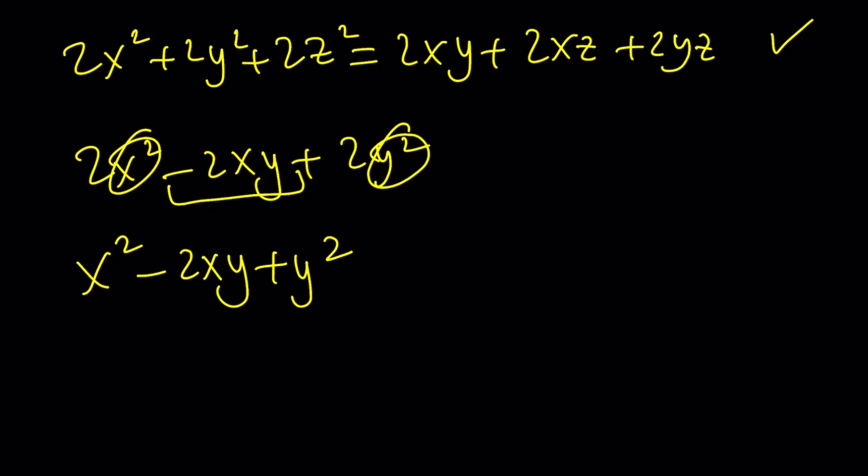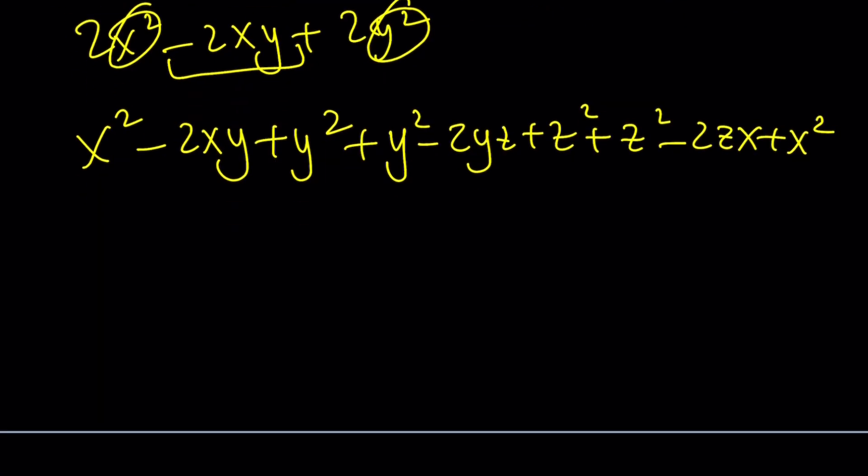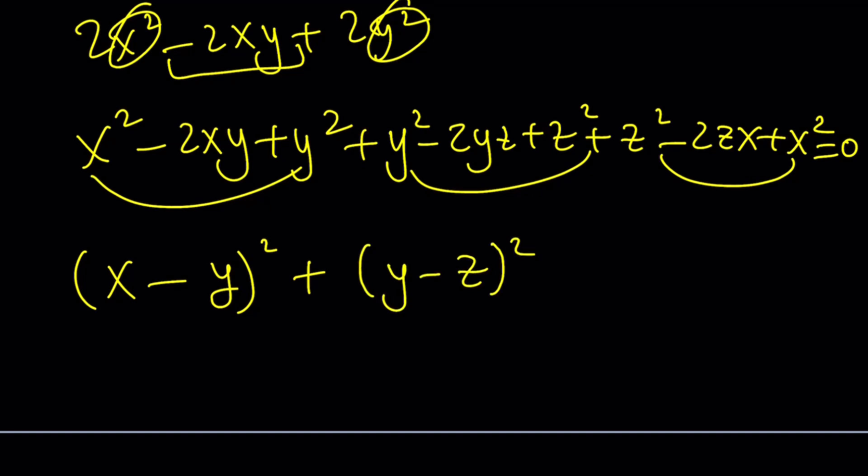So we're going to get x squared minus 2xy plus y squared. And we're going to get y squared minus 2yz plus z squared. And then finally we're going to get z squared minus 2zx plus x squared. Notice that if you add all of these up, you're going to get this expression, of course, when everything is on the left-hand side. Make sense? This is really nice. You know why? Because first of all, this is equal to 0. And then you're adding three perfect squares. It couldn't get any better. Trust me. Now you have x minus y squared, y minus z squared, and z minus x squared. And the sum is equal to 0.